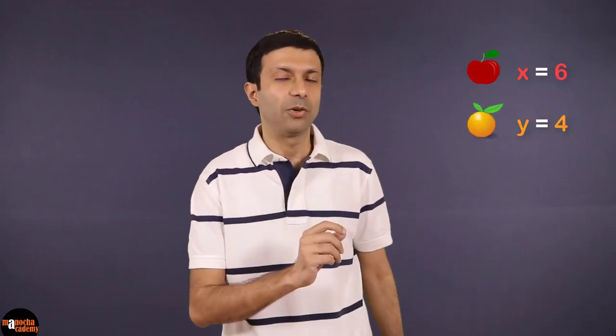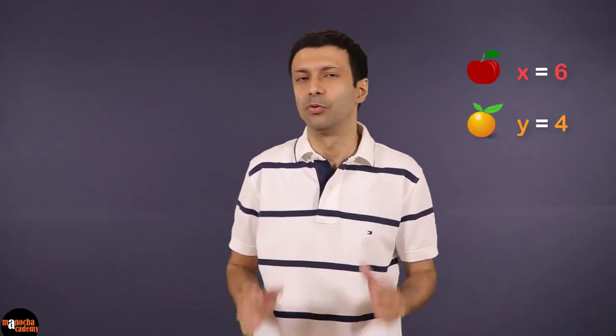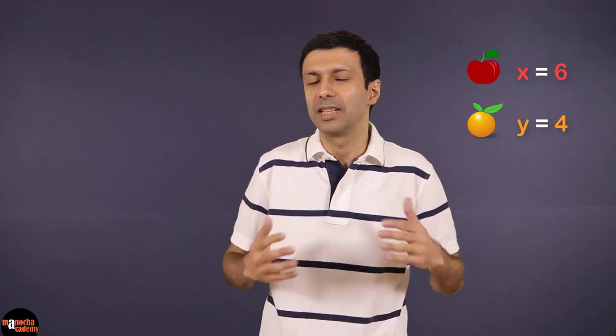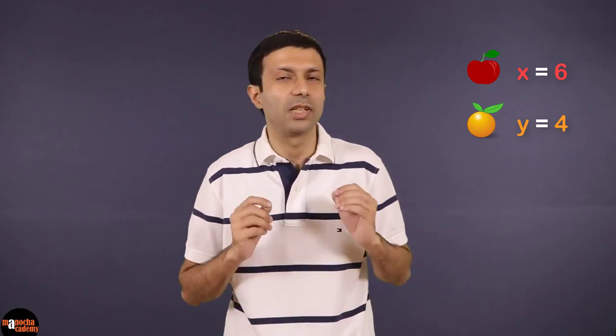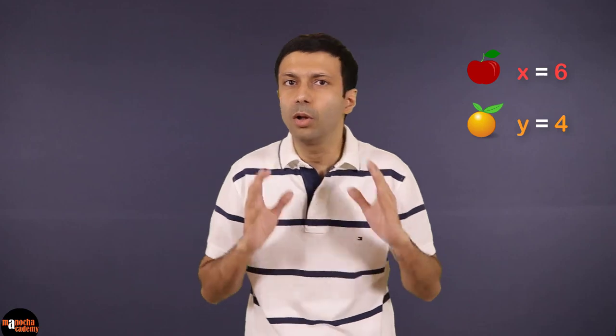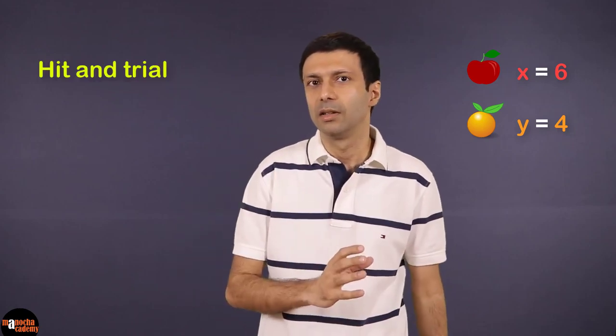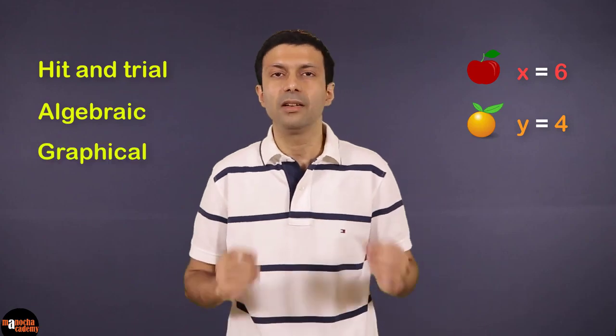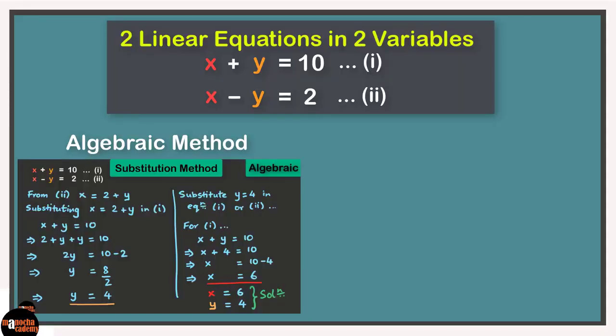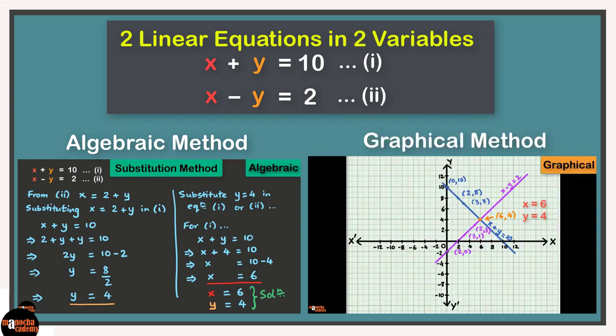So we got the same answer for our fruit puzzle. X equal to 6 and y equal to 4, or apples are 6 and oranges are 4. For all the three methods that we tried - the hit and trial method, the algebraic method, and graphical method. So let's put the summary of what we've learned till now on our concept board.